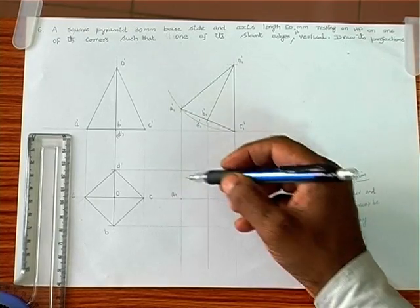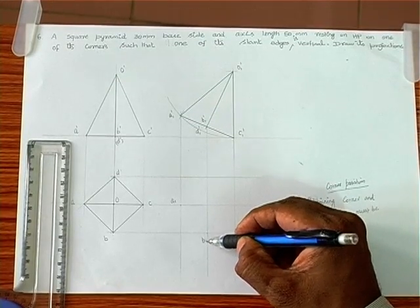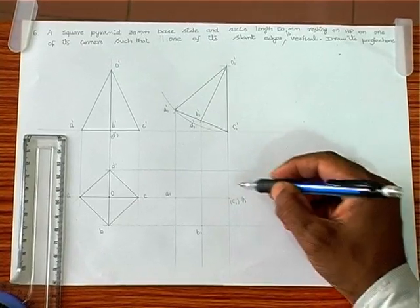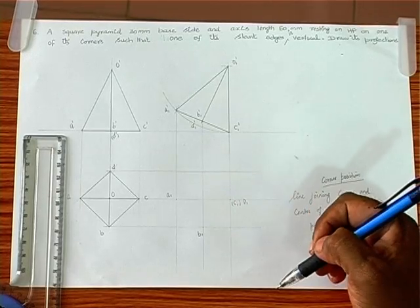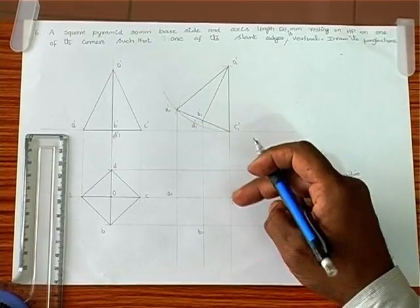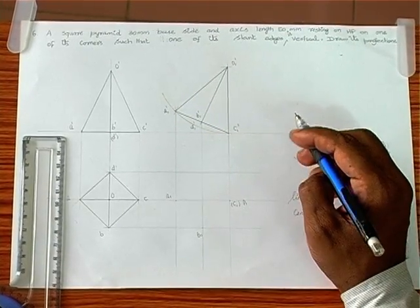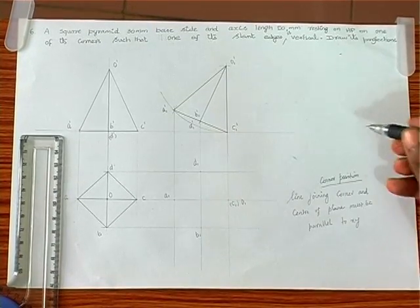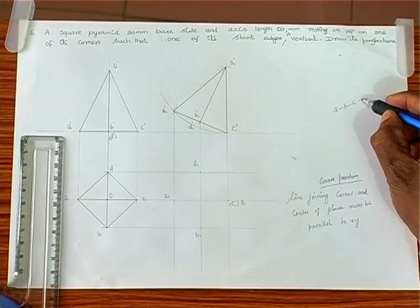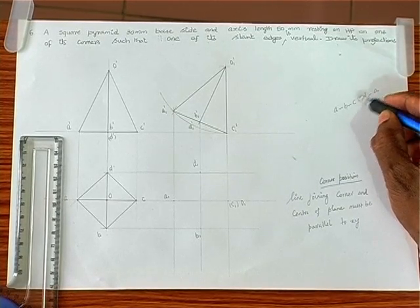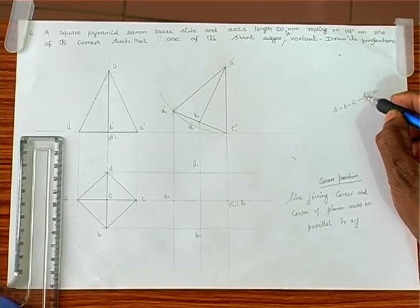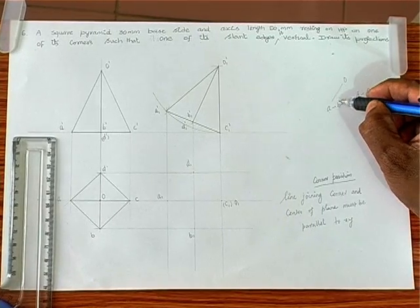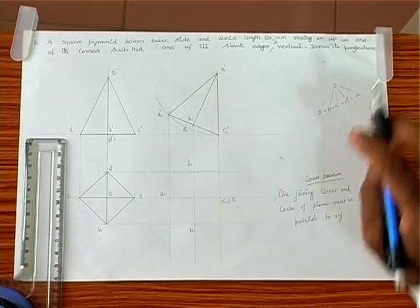Horizontally and vertically we get A1, B1 — C1 is invisible, O1 is invisible because the slant edge is vertical and a straight line that is vertical appears as a point in the top view. Similarly, we get D1. Connectivity: A connects with B, B with C, C with D, D with A, and all four points connect with O via OA, OB, OC, OD.